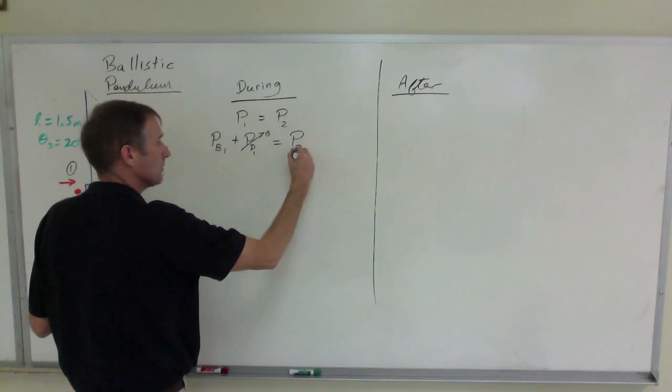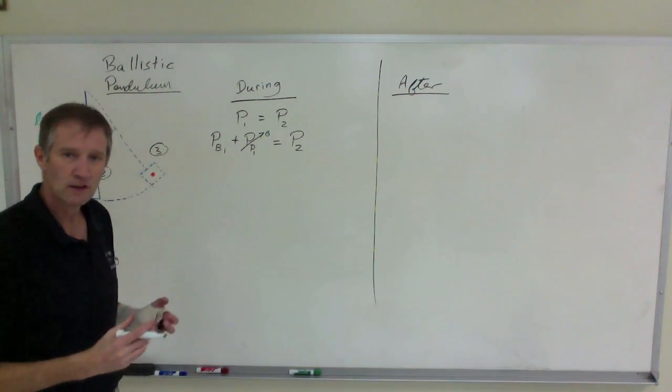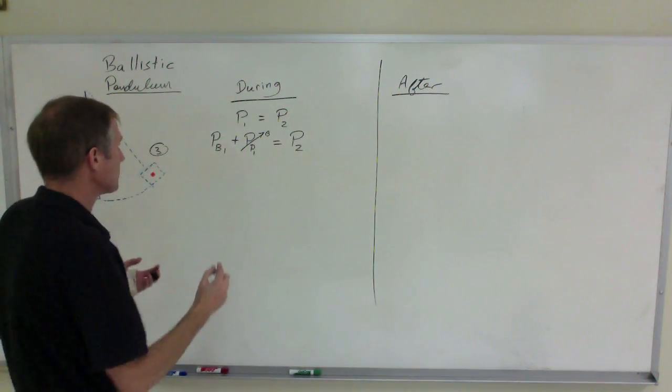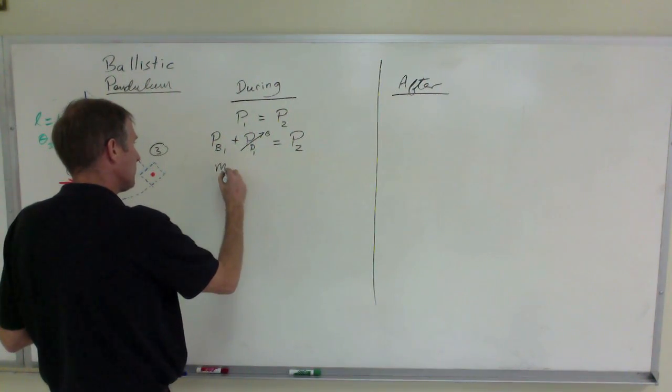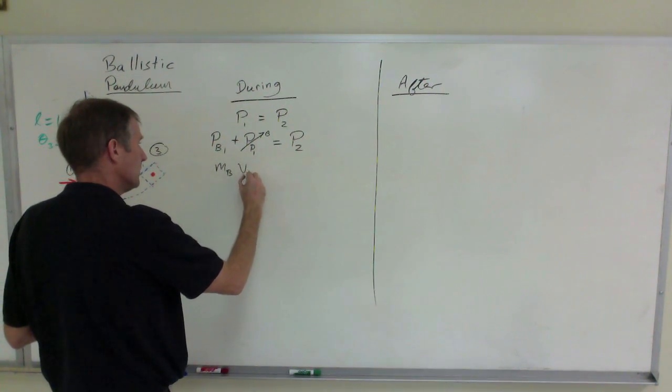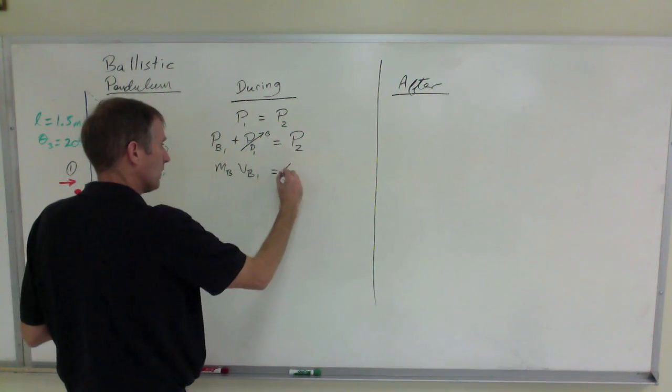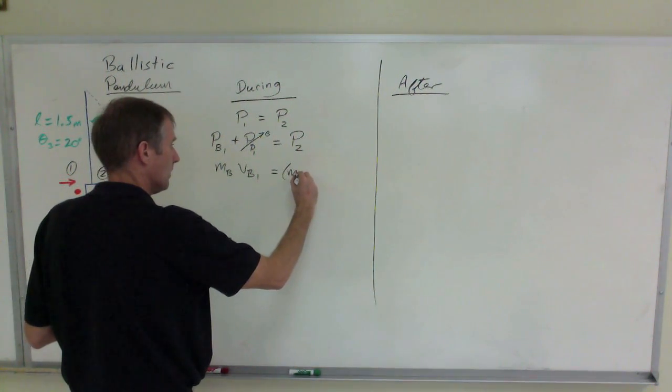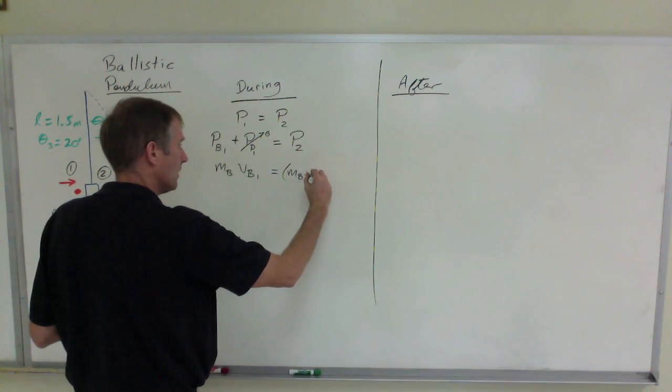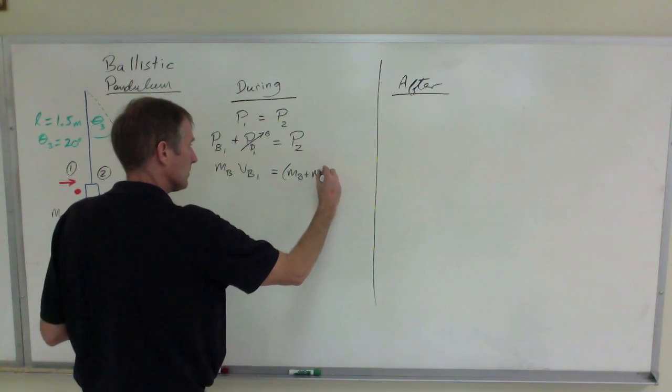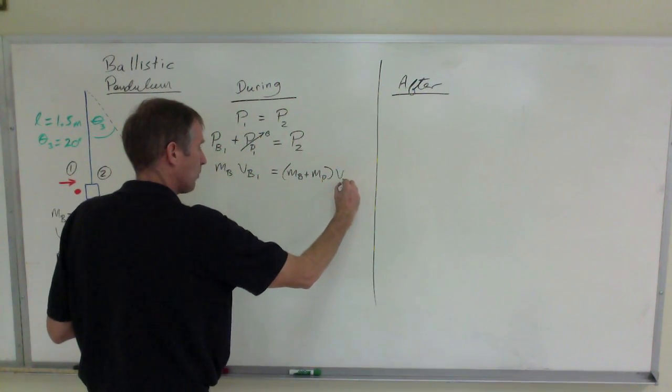And that will equal the combined momentum of the two stuck together afterwards. So this will be the mass of the bullet times its velocity, which is again what we're looking for. That will equal the combined mass of the bullet plus the pendulum times velocity at point two.